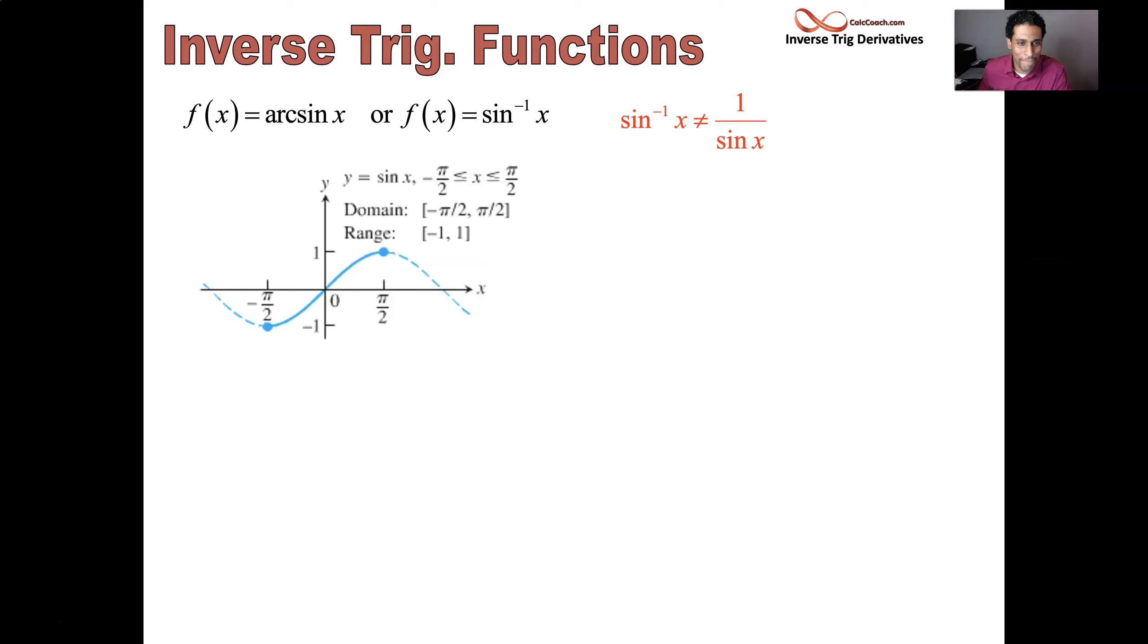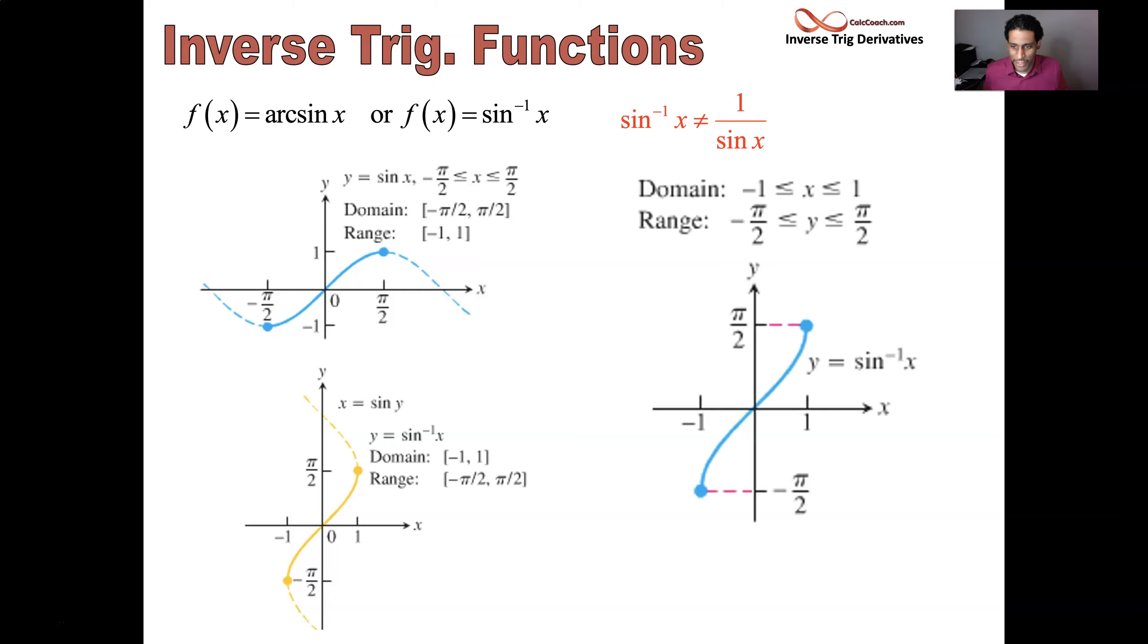The range will be minus 1 to 1. The domain will be minus π/2 to π/2. That's for sine. And then they flip-flop. The domain is going to be minus 1 to 1 for arc sine, and the range is going to be minus π/2 to π/2. That's what the graph of arc sine looks like, actually, not the dash part.